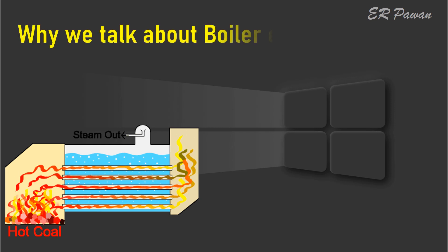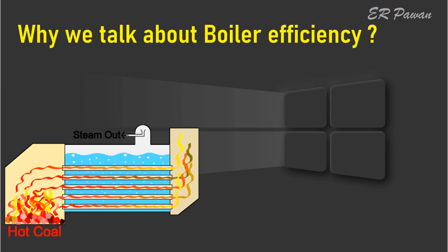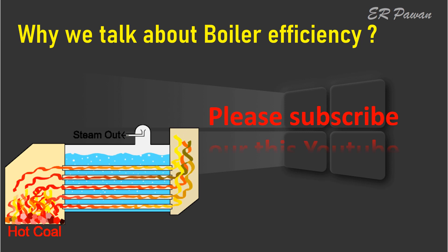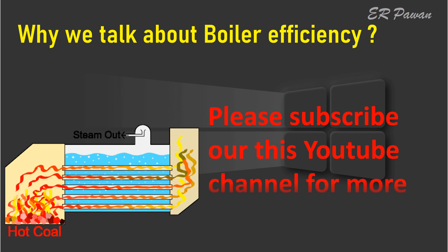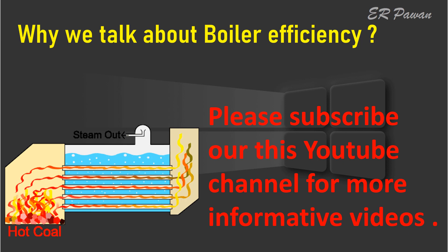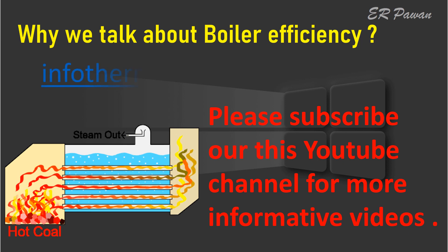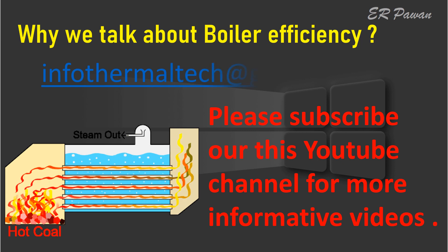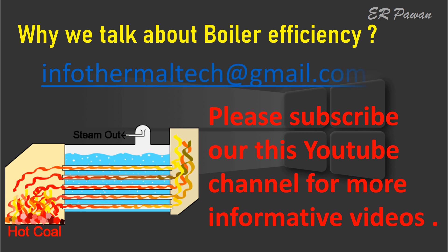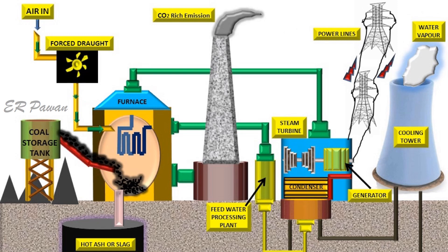Why do we talk about boiler efficiency? Boiler efficiency is a measure of how effectively chemical energy in fuel is converted into heat energy and steam going to the turbines. The largest boiler efficiency loss is sensible heat lost as hot flue gases and ash exit the boiler.